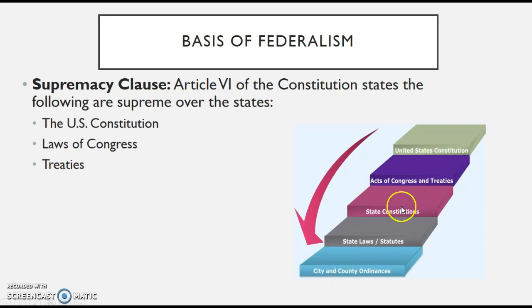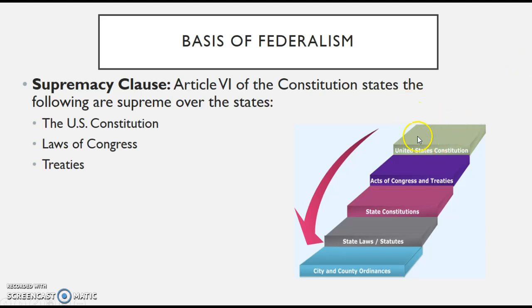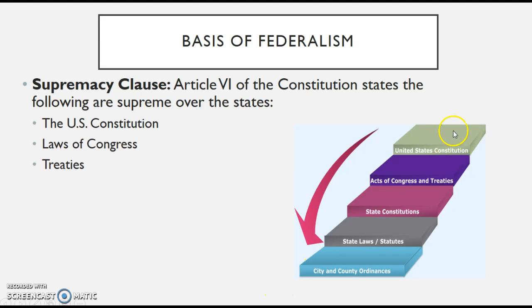Basically, if a city ordinance said that skateboarding is illegal everywhere in the city, but the U.S. Constitution — say, Amendment 28 — says that skateboarding is allowed wherever somebody wants, the U.S. Constitution is the highest, supreme law of the land and automatically trumps the city and county ordinance. Despite the fact that they made that ordinance, it cannot be in existence because the U.S. Constitution says otherwise. This is the pecking order in terms of laws from the lowest to the highest level.